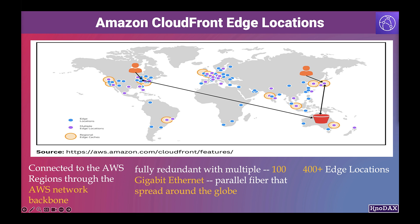Edge locations are not tied to availability zones or regions. As you can notice in the screenshot, in addition to edge locations displayed in blue color, there are also regional caches displayed in orange color. Regional edge caches are CloudFront locations that are deployed globally close to your viewers.